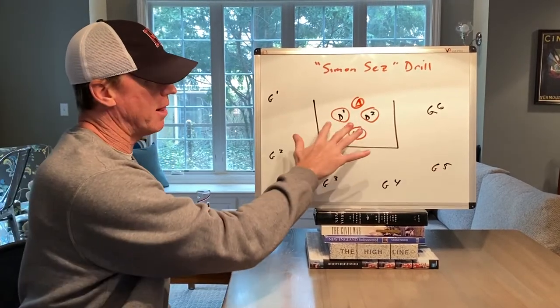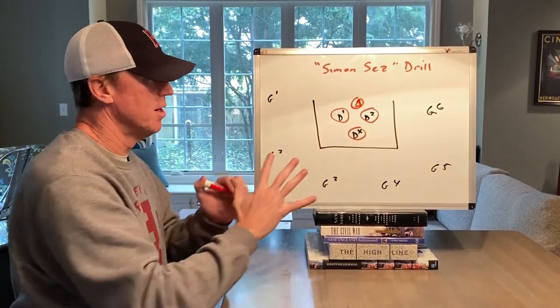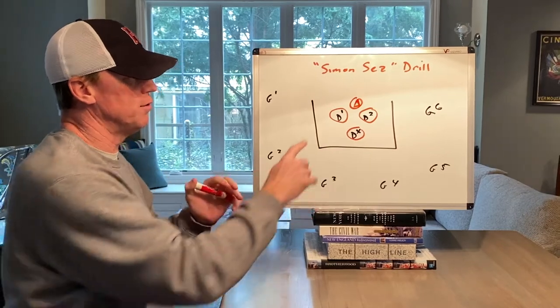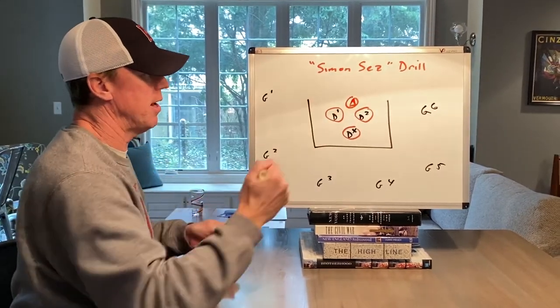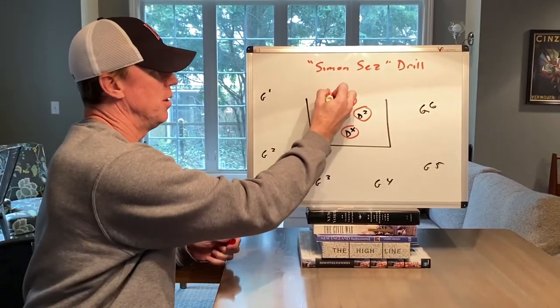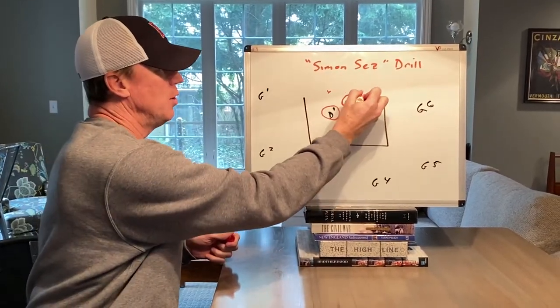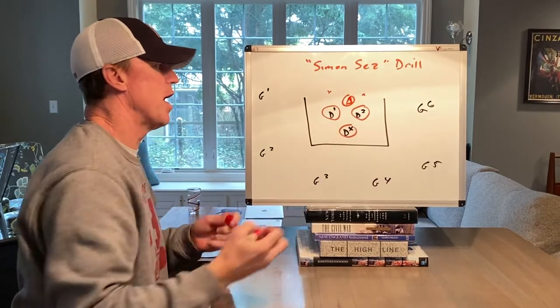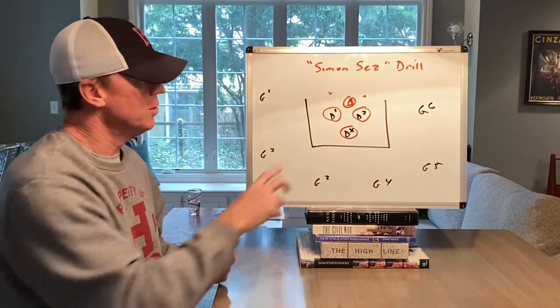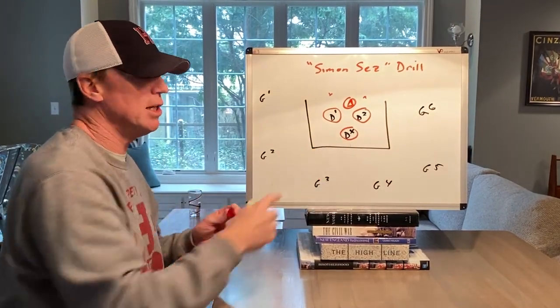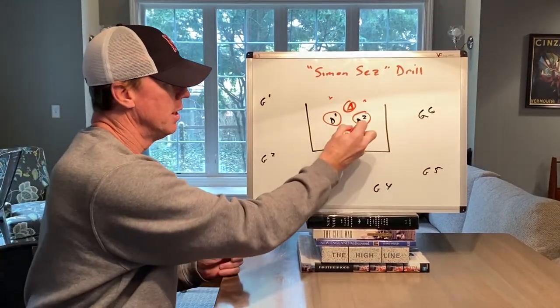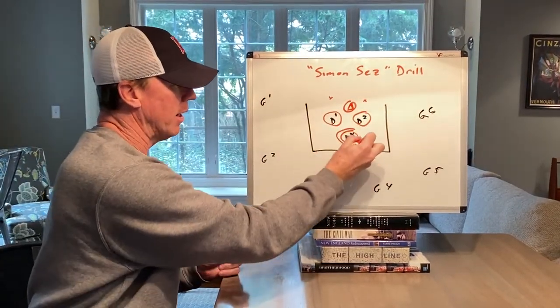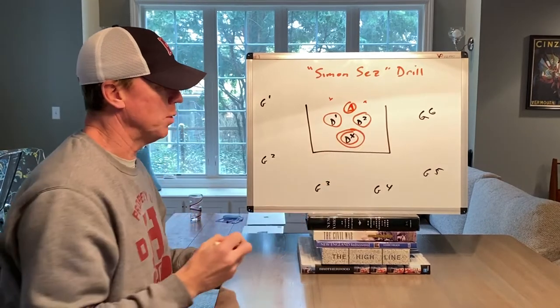They're also going to be in an athletic stance relative to imaginary players they'll have responsibility for — and you don't see those players because they're not in the drill. So D1 and D2 are going to take turns telling DX what to do.